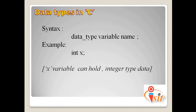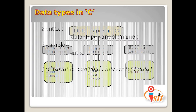To create a variable with a data type, the syntax is: data type followed by the variable name. For example, 'int x' — here 'int' is the data type and 'x' is the variable name. In C programming, x can now hold integer type data, meaning we can store values like 0, 1, 2, 3 inside x. That is the concept of data types in C programming.